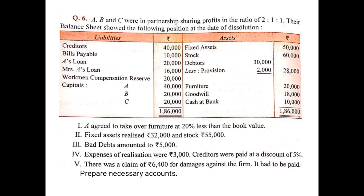Point four: expenses of realization were Rs. 3,000. Since it is not mentioned who paid the expenses, we assume the firm paid. Since it is a payment, it will be shown on the debit side of the realization account as: to bank (realization expenses) 3,000.